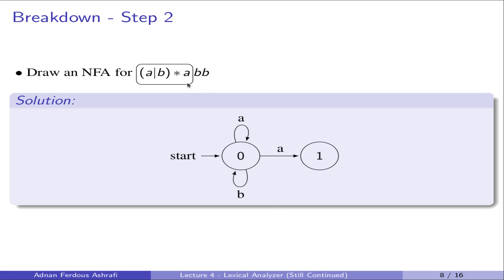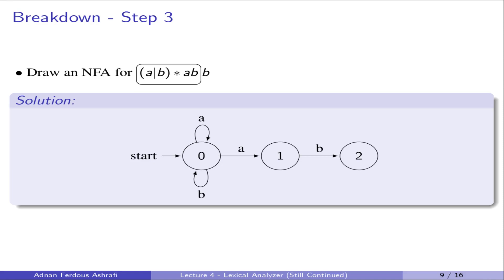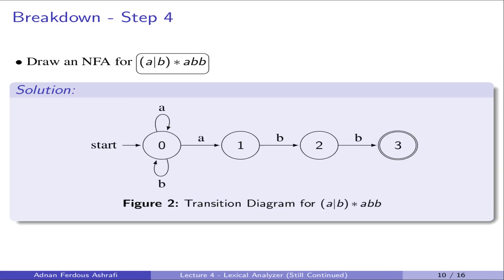We already have (a|b)*. Now, if there is exactly one 'a', we transition to another state. From state zero on input 'a', we move to state one. From state one on input 'b', we move to state two. From state two on the final 'b', we move to state three. As the spelling of 'abb' ends at that position, state three is our final state. This is the complete transition diagram for the regular expression (a|b)*abb.